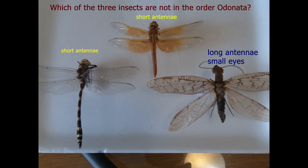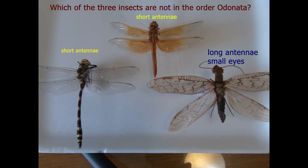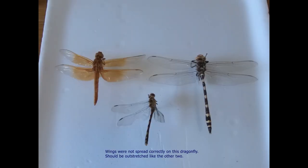Looking at these three insects, the first thing you notice is their wings are outstretched and translucent, and you can see a lot of venation in all three. But if you take a look at one of them, it's different from the other two — it has long antennae and very large sickle-like mandibles. Even though it shares some characteristics, it belongs to a completely different order: it's a dobsonfly, a different group entirely.